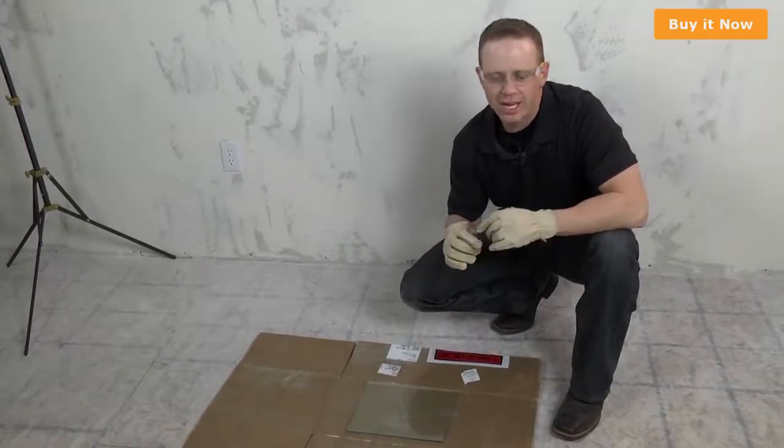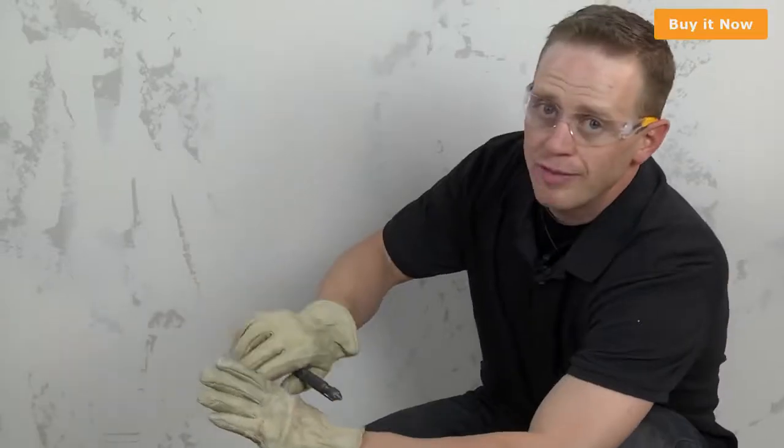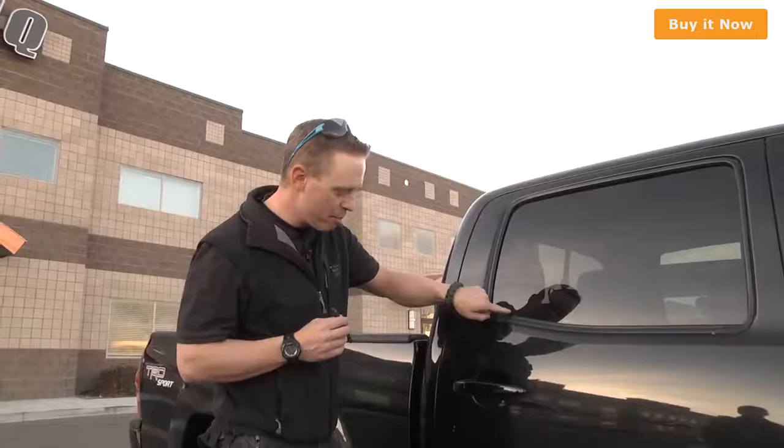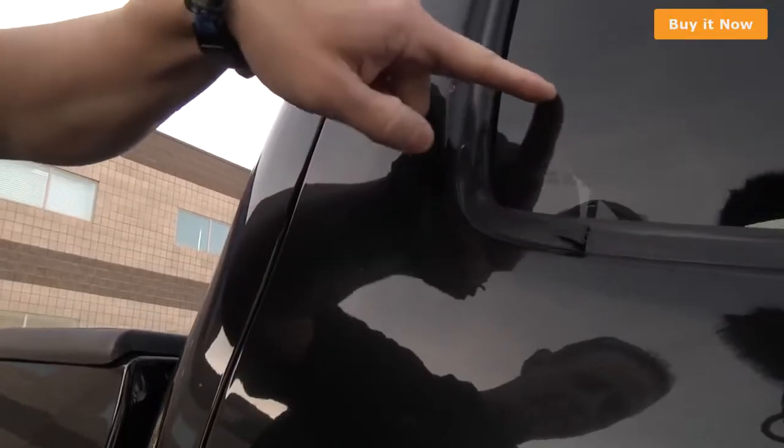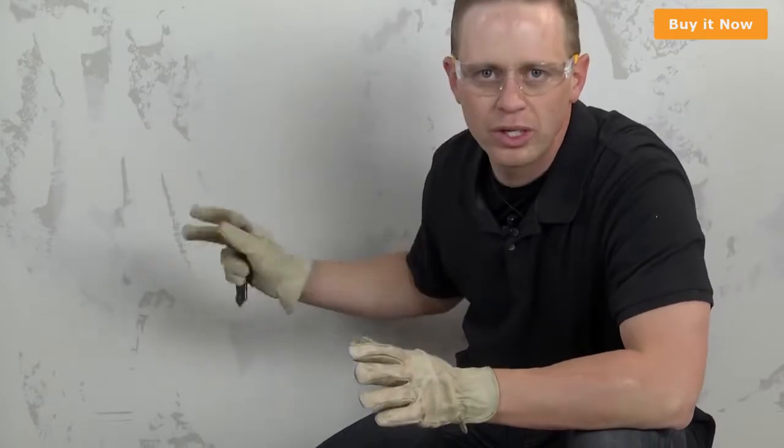Show how the glass breaker works. Now, if you ever need to extricate someone from a vehicle, on the driver's side, the window is shaped like this. Down here in the corner where the little symbol is, you hit it right there and that'll cause the whole window to shatter.